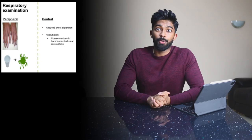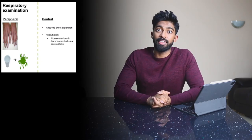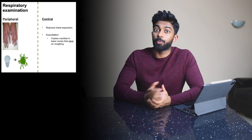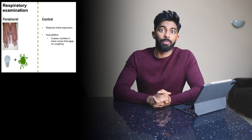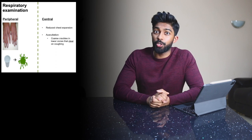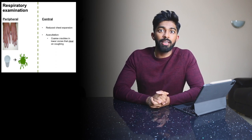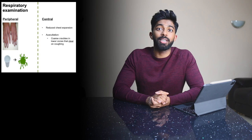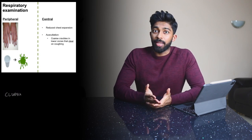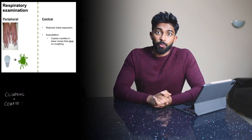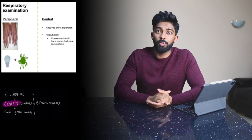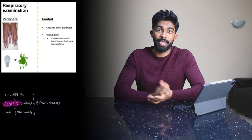So here are the positive findings from this case. Peripherally we can see that this patient has digital clubbing and also we can see a sputum pot by the bedside which has some thick green sputum. When focusing on the chest, on palpation there's reduced chest expansion bilaterally, and on auscultation we think we can hear coarse crackles in the lower zones that clear on coughing. So the clubbing in combination with these coarse crackles as well as that sputum pot with that thick green sputum is all very classic for bronchiectasis.